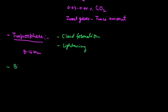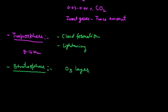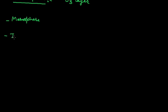The second region we call the stratosphere. In this region, there are no climatic changes. This region contains the ozone layer, also called the ozosphere. The third region is called the mesosphere. The next layer is called the ionosphere, where gases are present in ion form. The ionosphere is present between 60 to 180 km. And beyond 180 km, we call it the exosphere, which is the outermost layer of the atmosphere.